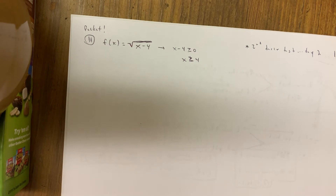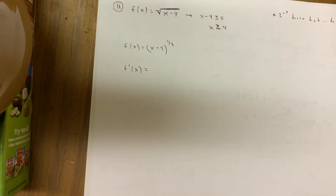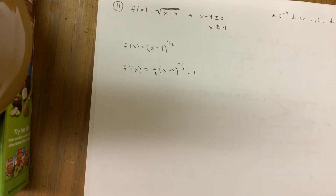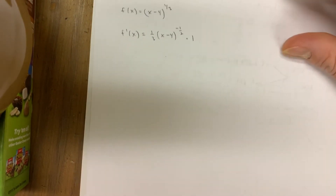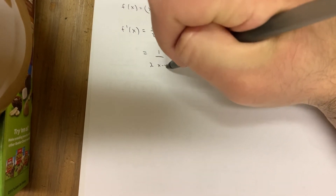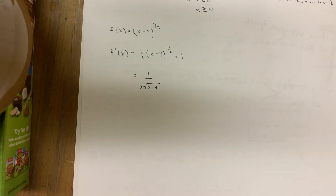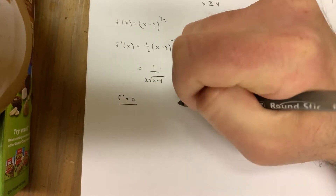Rewrite f(x) = (x − 4)^(1/2) — it's a chain rule situation. Drop the 1/2 down, rewrite x minus 4 raised to the one less: 1/2 minus 1 is negative 1/2. Don't forget to multiply by the derivative of the inside, which is just 1. Simplify: f′(x) = 1 / [2√(x − 4)]. Now figure out when it's zero or non-existent for critical x-values — a fraction equals zero when its numerator equals zero, but you can't make 1 equal zero.